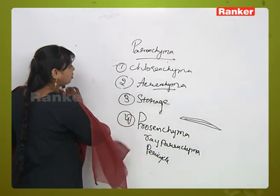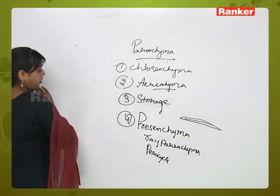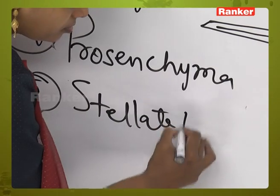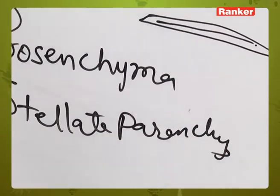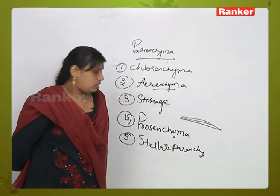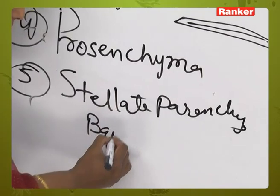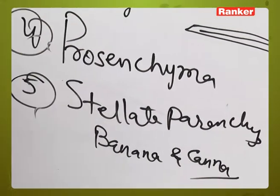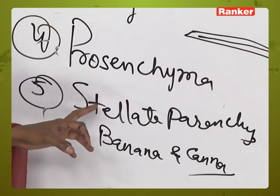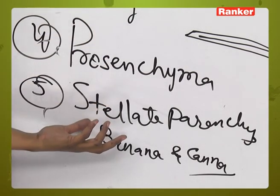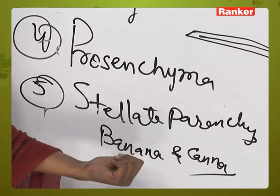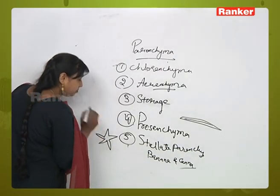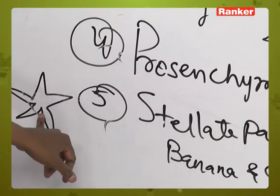The fifth type is stellate parenchyma. In some plants like banana and canna — canna being a showy flowering plant with long red flowers — the parenchymatous tissues in the leaves show parenchyma in the form of a star shape. Stellate or star-shaped parenchyma is present in these plants.